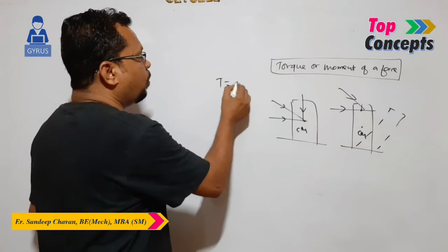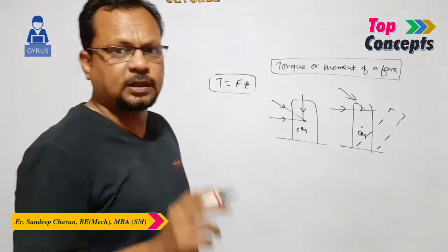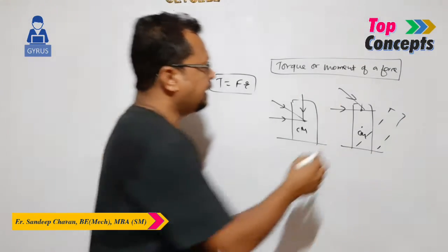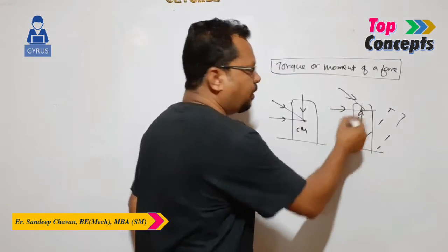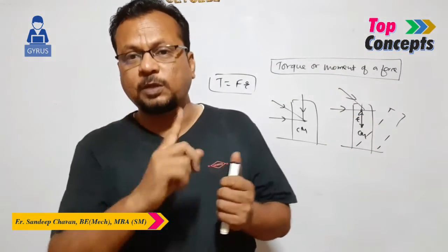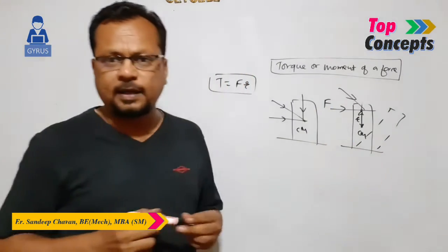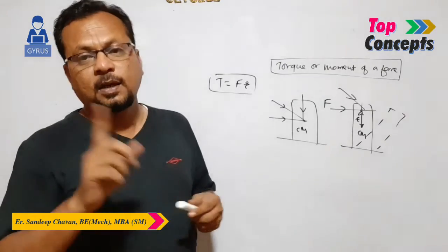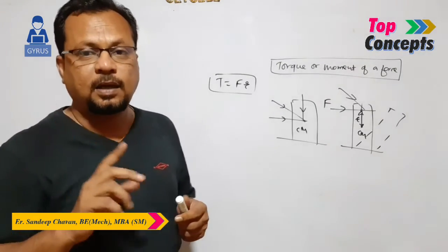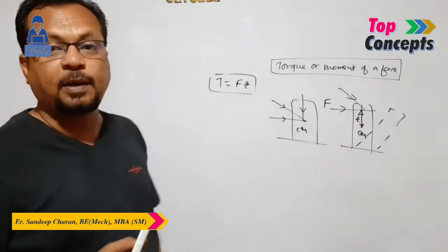The formula is force into that distance. If you have a formula, then you have magnitude. This distance R is the distance from the center of mass. So the force into the distance about which the body is rotating gives torque.